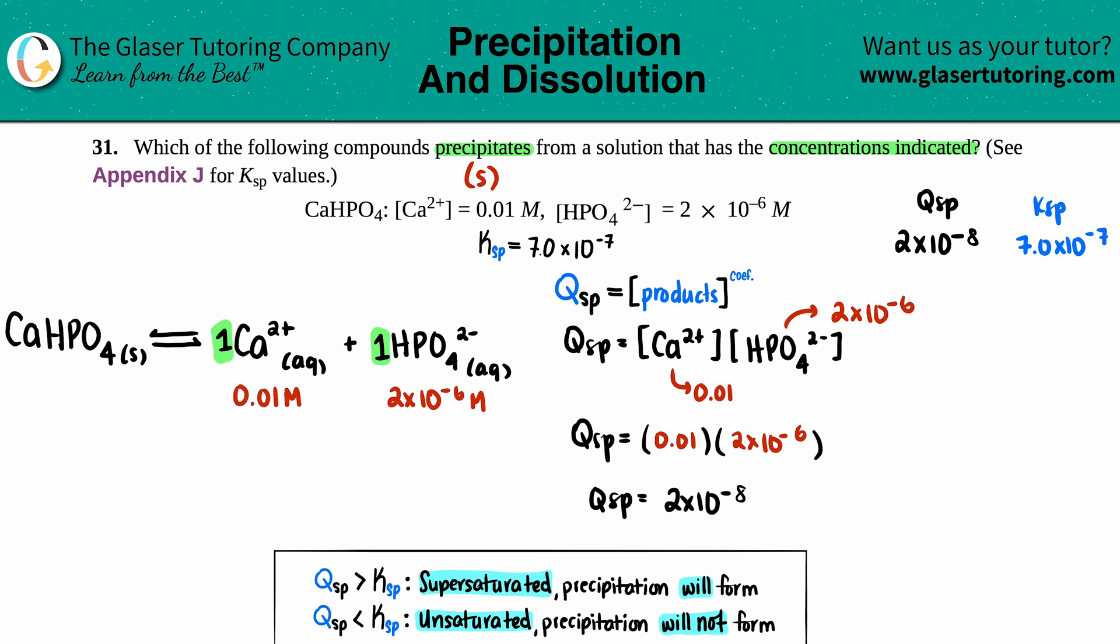Always look at your exponents first. If they're different, which they are in this case - one is 10 to the negative 8, one is 10 to the negative 7 - you don't even have to look at the beginning numbers. On a number line, negative 7 is greater than negative 8, so that means the Qsp is less than the Ksp.